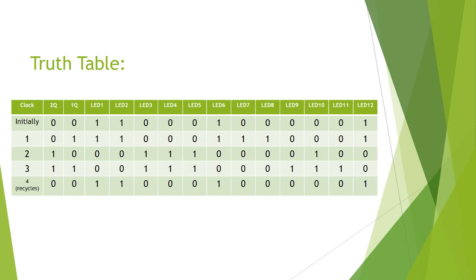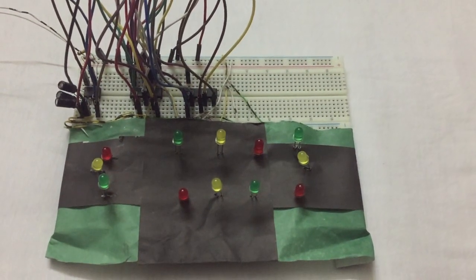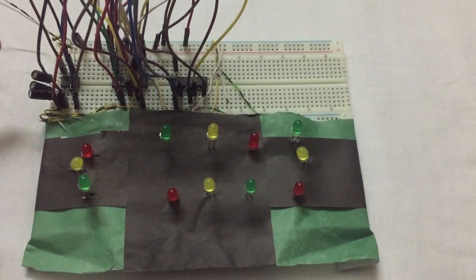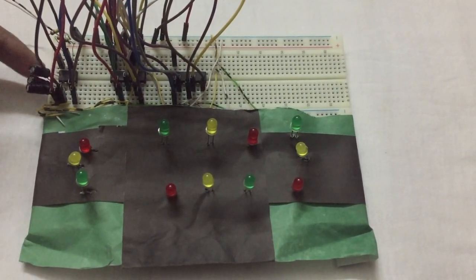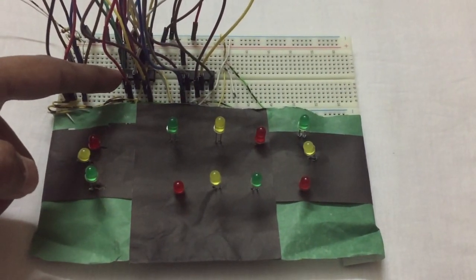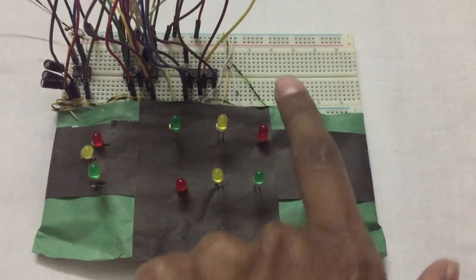Now let's have a look at our actual project. This is our final project. This right here is our 555 timer, this is our 7473 IC which is the dual JK flip-flop, and this is our AND gate.